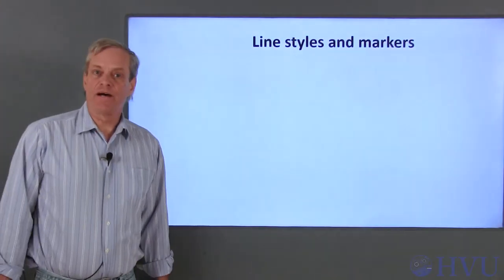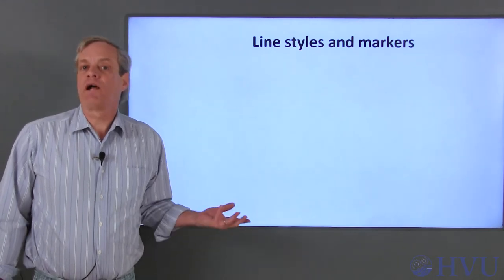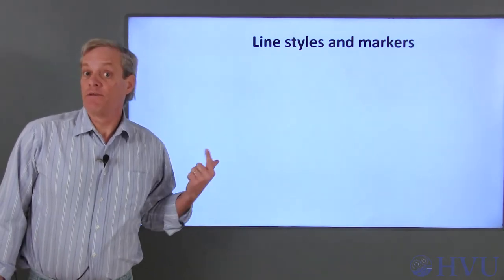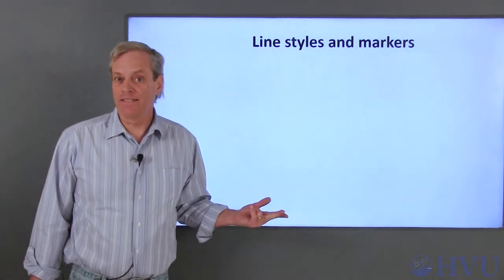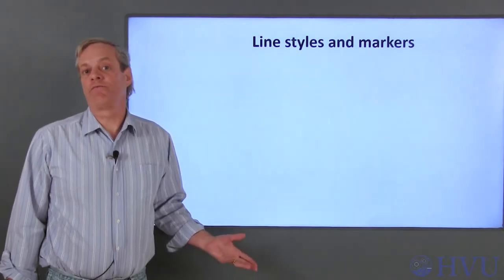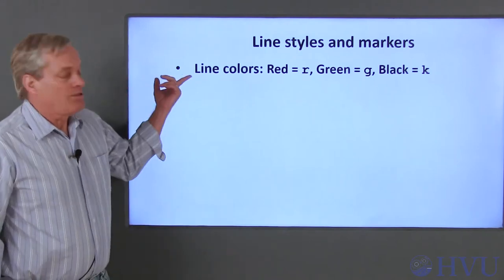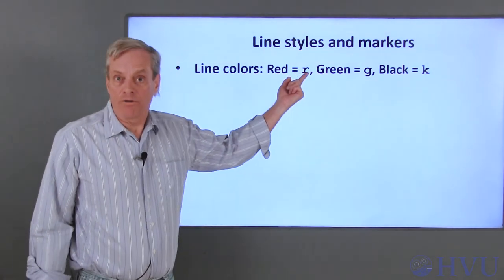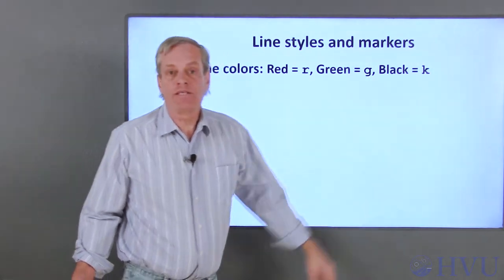Next, I'll talk about customizing the way that data are displayed on the plot. There are three primary characteristics for data display: markers at the data points, the color of the line connecting the data points, and the type of line connecting the data points. I'll just give some example codes here — complete lists of codes are available in Octave's help files. Line colors are specified by a letter.